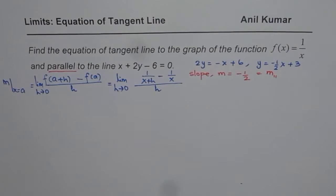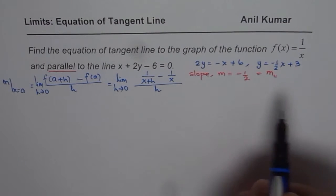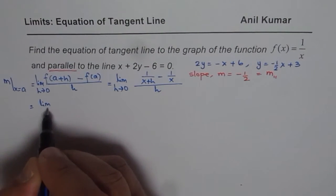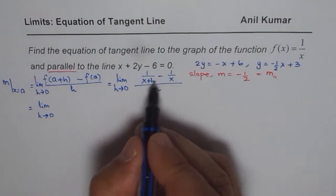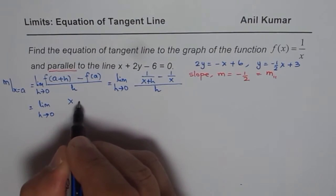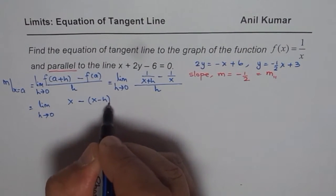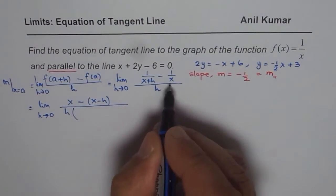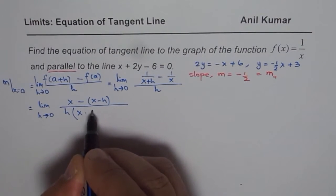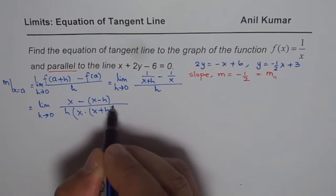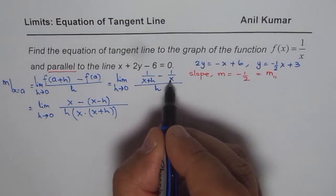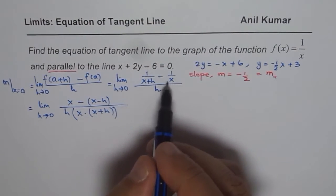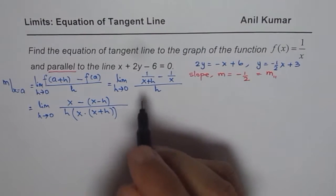Now we simplify this expression. Taking the limit as h approaches 0, we cross-multiply to get a common denominator. The numerator becomes a - (a+h), and the denominator is h times a(a+h). So we get: limit h→0 of [a - (a+h)] / [h · a(a+h)].